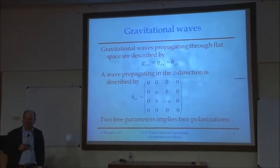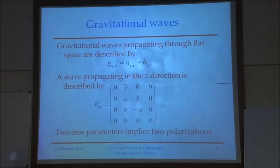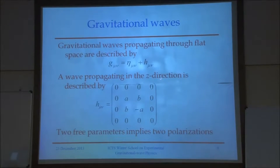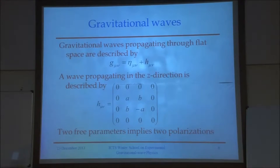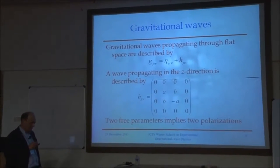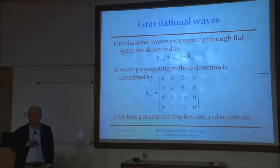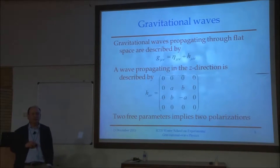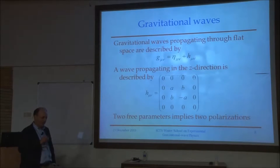The form of the perturbation to the metric describing a gravitational wave — for waves traveling along the z direction — has two parameters: a and b. That's either an obvious statement or a hint that we're talking about two polarizations of gravitational waves traveling along the z direction.